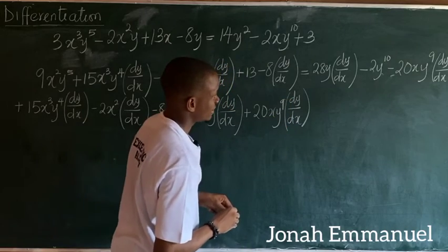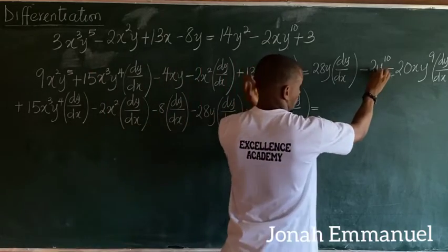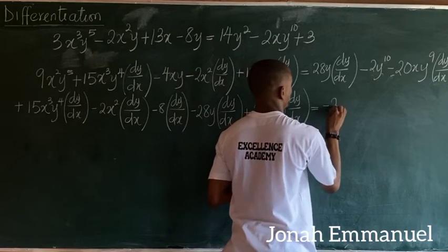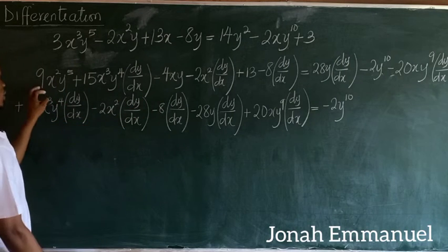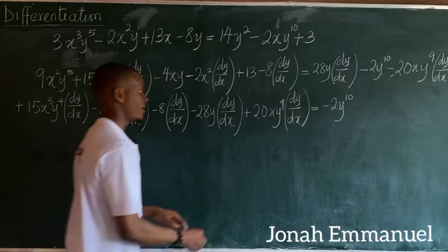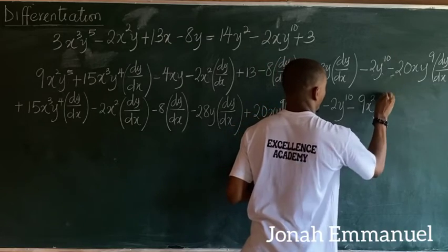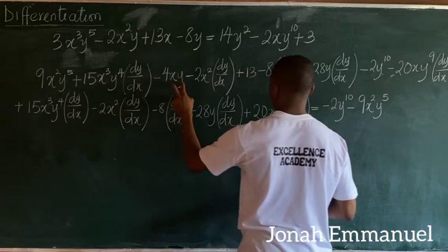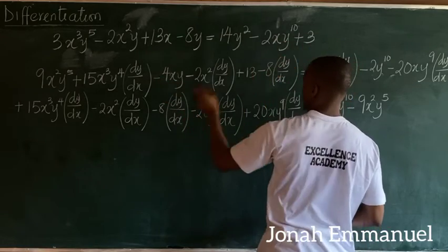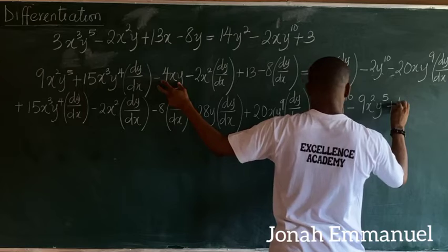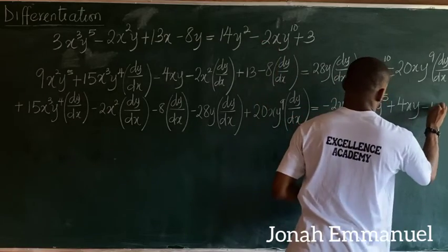Terms without dy/dx move to the right-hand side. Moving them across changes their signs: minus 2y¹⁰, minus 9x²y⁵ (was positive, now negative), plus 4xy (was negative, now positive), and minus 13.